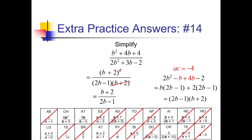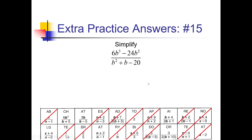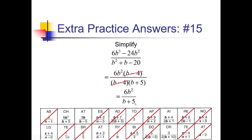Last problem. My numerator: I can take out a 6 and also a b² because that's the lowest exponent, leaving 6b²(b − 4). For my denominator, I need factors of negative 20 that add up to 1 — negative 4 and positive 5 works, giving (b − 4)(b + 5). The (b − 4)s cancel, leaving 6b² over (b + 5). I see that over here toward the upper left — cross that off. And we're ready to go ahead and solve the puzzle.